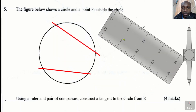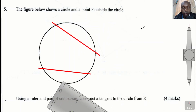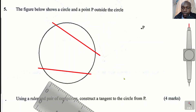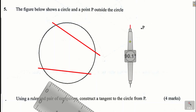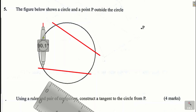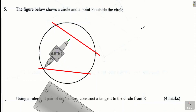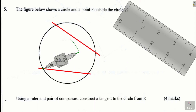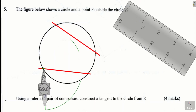I will construct the perpendicular bisectors of each of those chords. To construct the perpendicular bisector of a line, I take a pair of compasses. I will start by constructing the perpendicular bisector of this chord. Stand at one end of the chord, mark an arc on the top, then mark another arc down there.